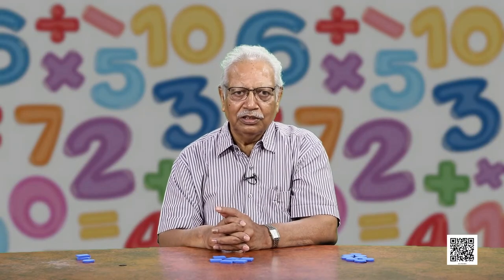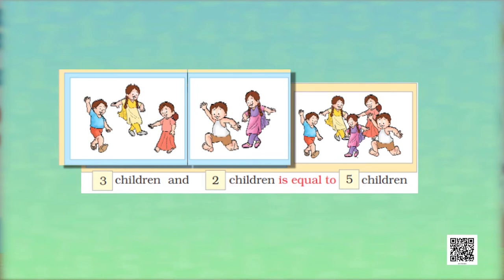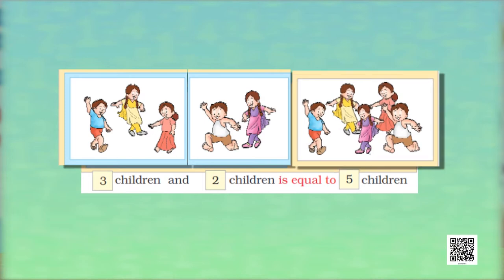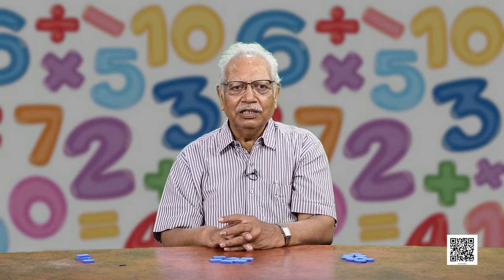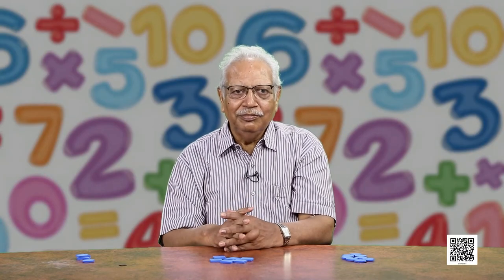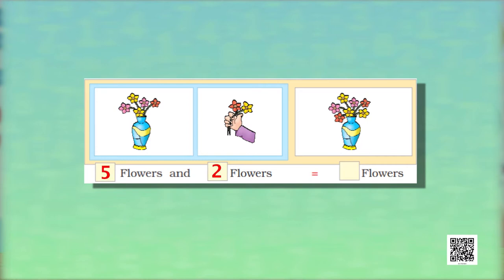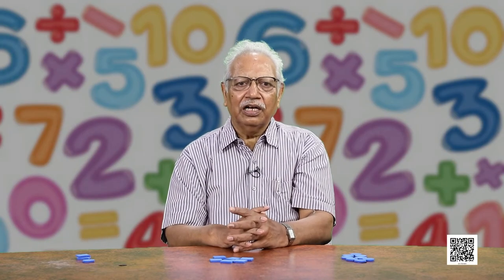Similarly, these are 3 children playing and 2 more children join them to play, so how many children do they become? That number is equal to 5 children. Now we are using the word 'equal to.' We are counting flowers in the vase — 5 flowers, and then 2 more flowers are added. Counting further: 5 and 2 more flowers becomes 6 and 7. All together 7 flowers, or we can say 5 flowers and 2 flowers are equal to 7 flowers.